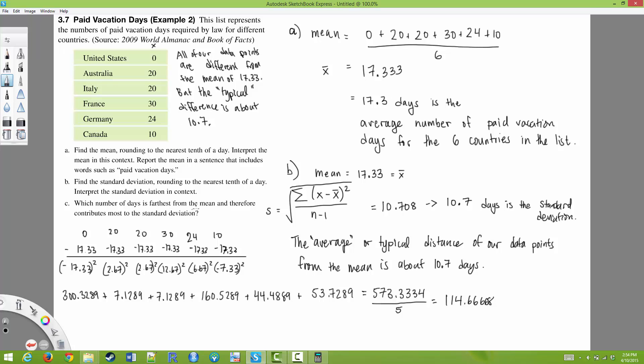Part C asks, which number of days is farthest from the mean and therefore contributes most to the standard deviation? And that would be the United States. So if we look at the distances from the mean, subtracting off 17.33, we get the distance from the mean. There are two countries that are quite different. And that's France and the United States. So France is different in that they give much more vacation days than the average. 12.67 days more than what's the average. And the United States is also different in that the United States gives far fewer days from the average. And in this case, the United States is more different. So the answer to C is the United States has zero vacation days. And that is very different from the mean. Therefore, it contributes the most to the standard deviation.